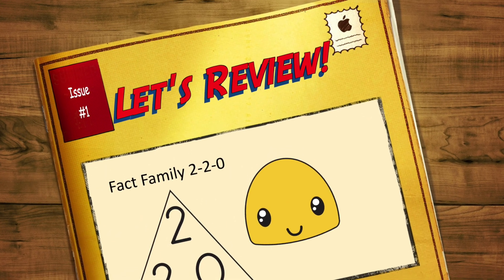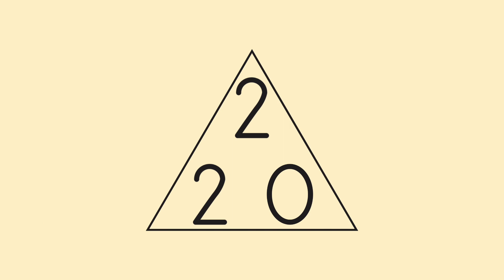Let's review what Emily discovered. A fact family is a group of numbers that go together to make addition and subtraction number sentences. A fact family triangle helps us to find these number sentences.